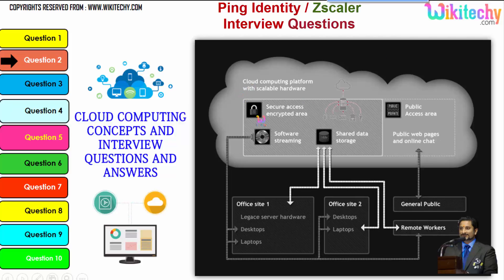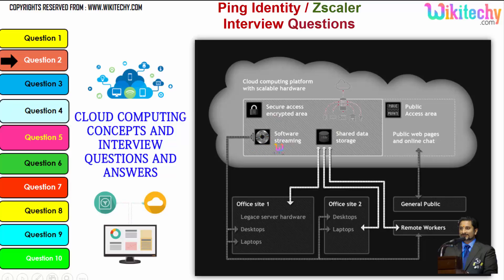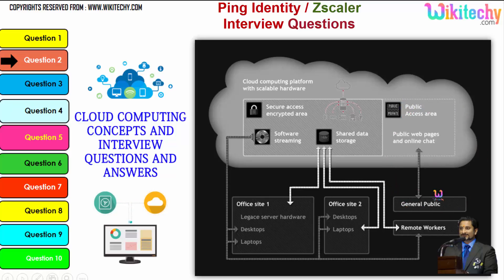Cloud computing will have a public access area with public-facing pages for end users. There is also secure data access, shared data storage, and software streaming. Companies can use it as a private kind of cloud, and the public can use it to access web pages or websites. This is how cloud computing works.